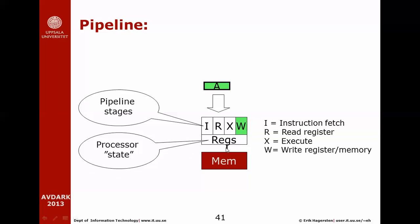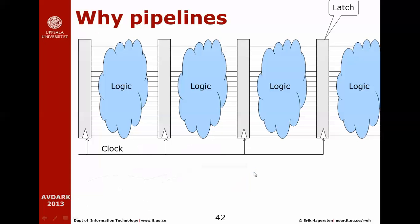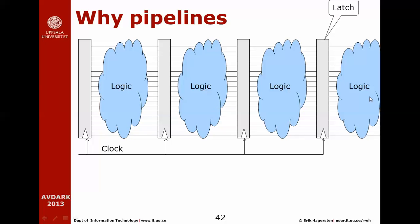The processor state resides in the register file, and the instruction and data reside in memory. Pipeline stages speed up computation by chopping up the work into portions. Once all portions are done, the instruction is complete. Since we break each instruction into smaller tasks, we can clock the design much faster. A clock edge signals when to pass information — the result from one stage's logic is put into a latch, ready to be read by the next pipeline stage.